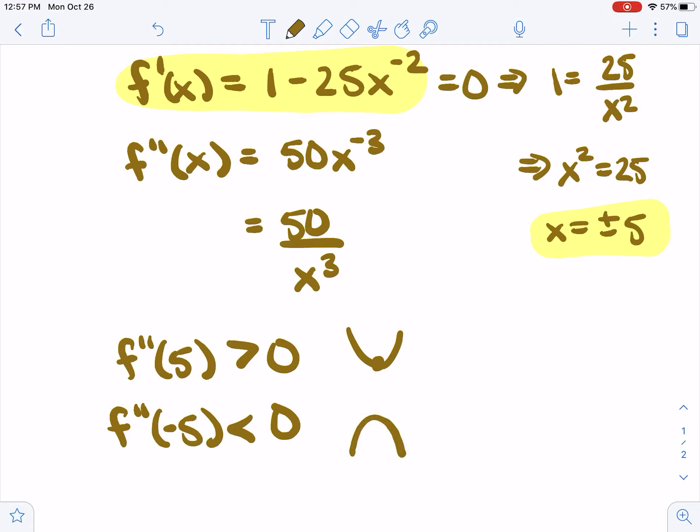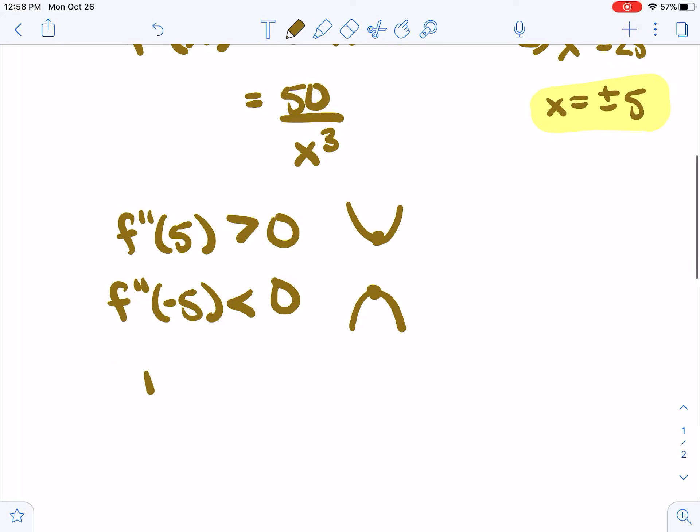A function that's concave down like a frown at the critical point, if we just look at it, corresponds to a local max. So we know we have a local min at x equals 5 and we have a local max at x equals negative 5.